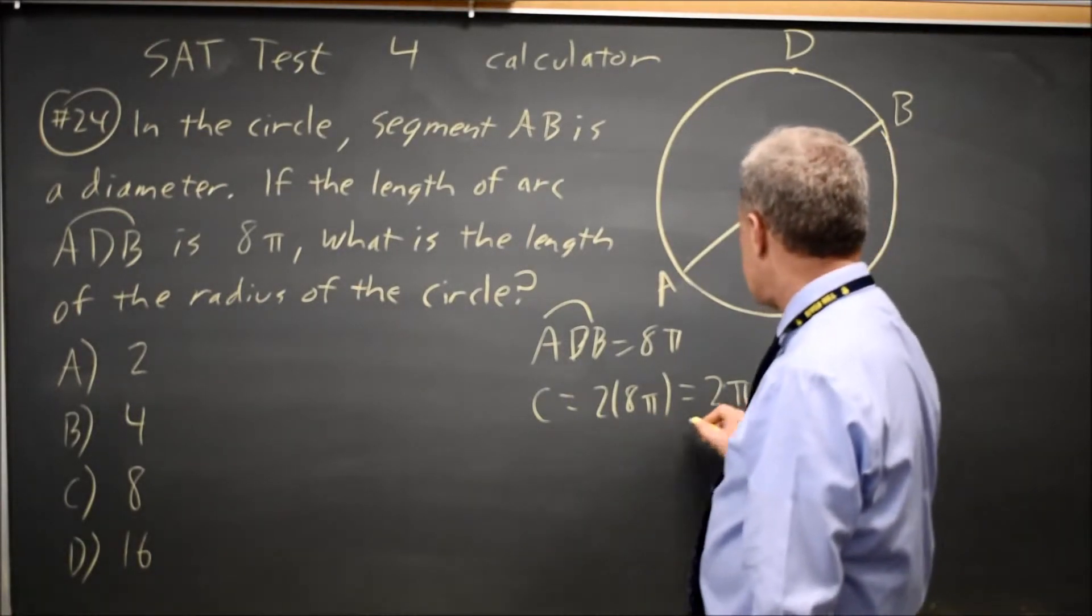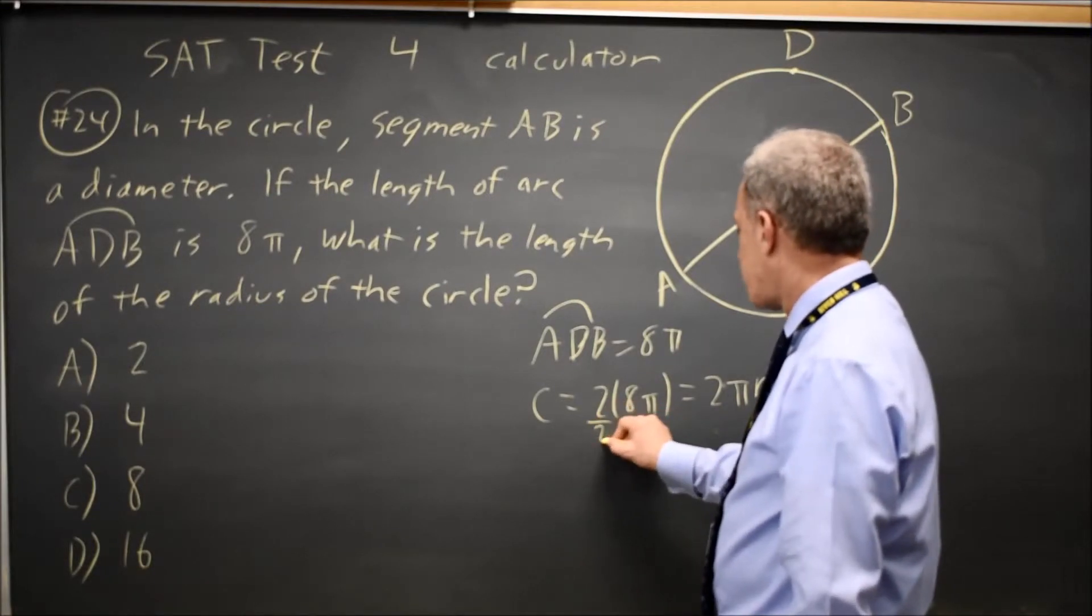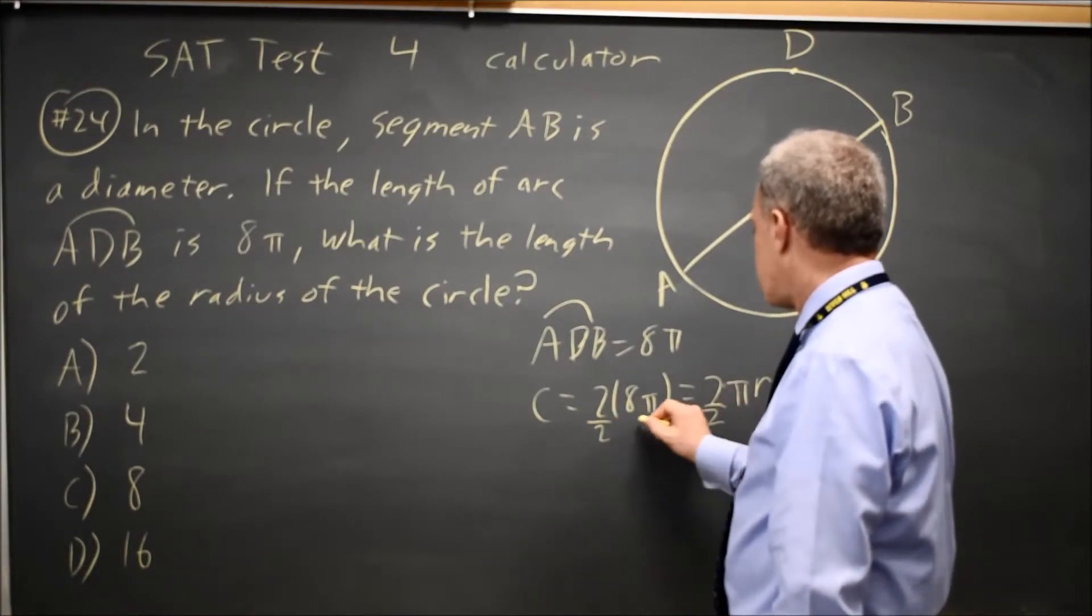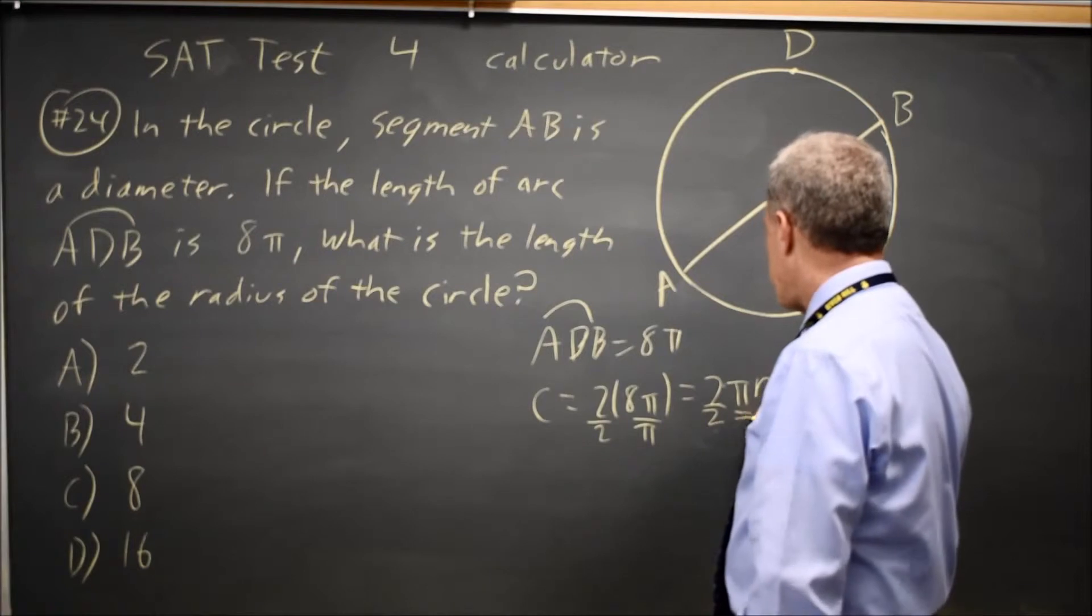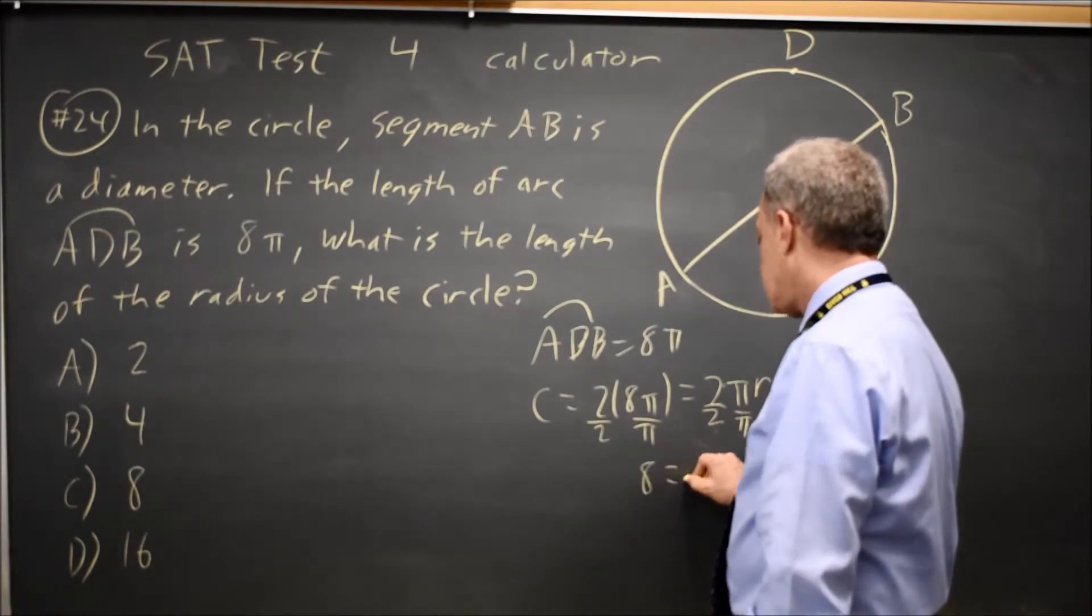If twice 8 pi is twice pi r, divided by 2 divided by pi, and you're left with 8 equals r.